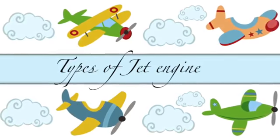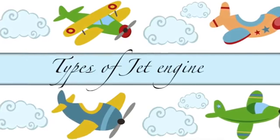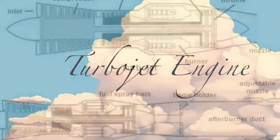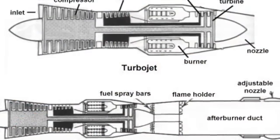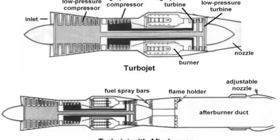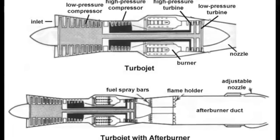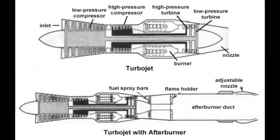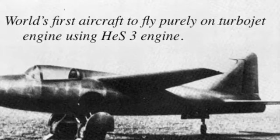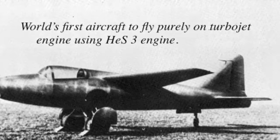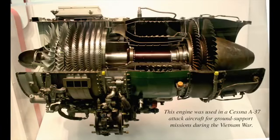There are a large number of different types of jet engines, all of which achieve forward thrust from the principle of jet propulsion. The first is the turbojet. A turbojet engine is a gas turbine engine that works by compressing air with an inlet and a compressor, mixing fuel with the compressed air, burning the mixture in the combustor, and then passing the hot high-pressure air through a turbine and a nozzle. The compressor is powered by the turbine which extracts energy from the expanding gas passing through it. The engine converts internal energy in the fuel to kinetic energy in the exhaust, producing thrust. All the air ingested by the inlet is passed through the compressor, combustor and turbine.